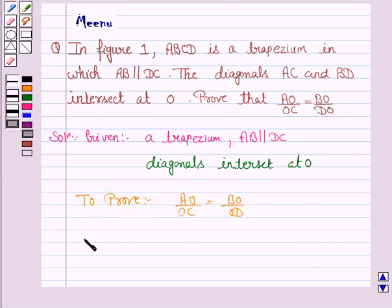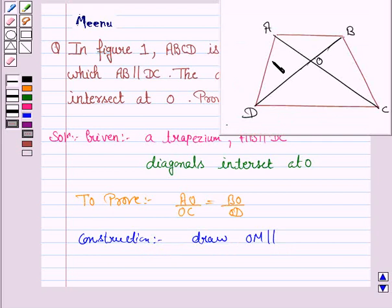Let's now do some construction. Draw OM parallel to AB and since AB is parallel to DC, so OM is parallel to DC. So this is the line OM which is parallel to AB and DC.